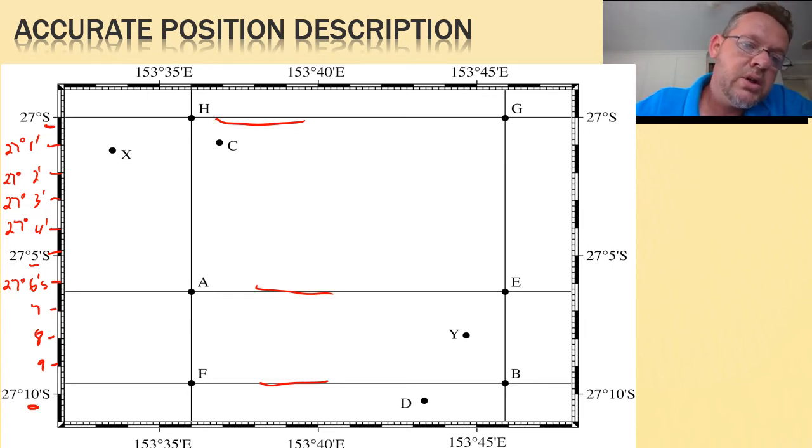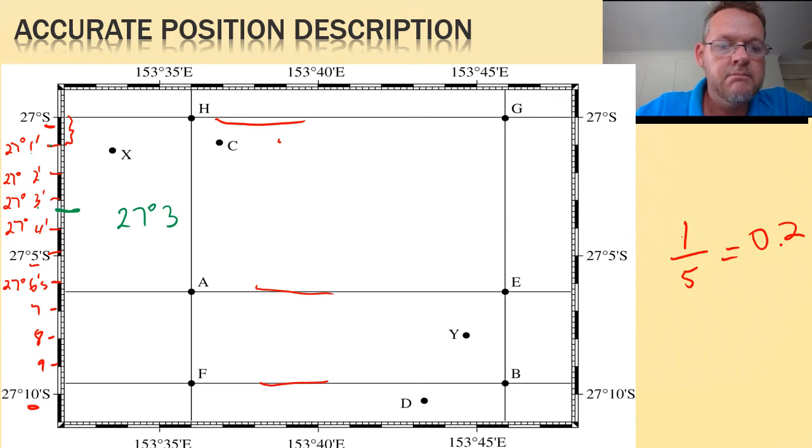So each of those larger markings represent 1 minute. Now, if I have a look at the smaller scale on this side, you can see that 1 minute is divided into fifths. One fifth is the same as saying 0.2. So if I want to look at a certain point in particular, let's go here first of all. I will be reading down 27 degrees and 1, 2, 3 minutes. So 27 degrees, 3 minutes.